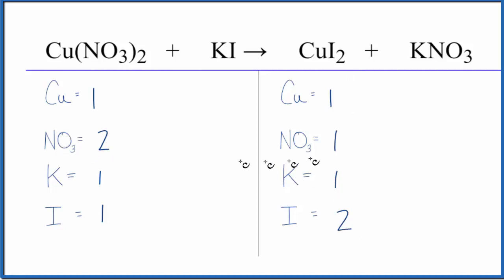Let's first balance the nitrate. We could just put a two in front of the KNO3. So we have one nitrate times two. That gives us two. We've just balanced the nitrates. And then one potassium times two. Now we have two potassium atoms.